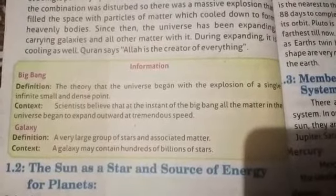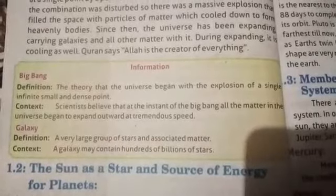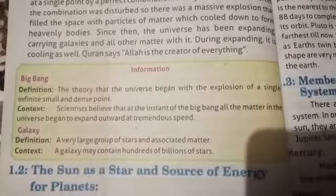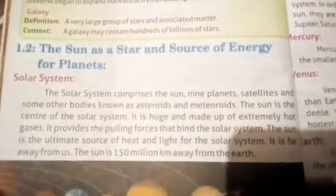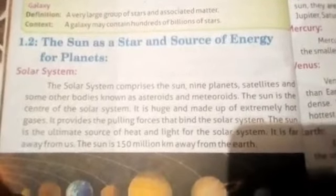Scientists believe that at the instance of the Big Bang, all the matter in the universe began to expand outwards at tremendous speed. Galaxy definition: a very large group of stars and associated matter. A galaxy may contain hundreds of billions of stars. The sun is a star and a source of energy. The solar system comprises the sun, nine planets, satellites, and some other bodies known as asteroids and meteoroids. The sun is the center of the solar system, huge and made up of extremely hot gases. It provides the pulling force that binds the solar system and is the ultimate source of heat and light for the solar system.